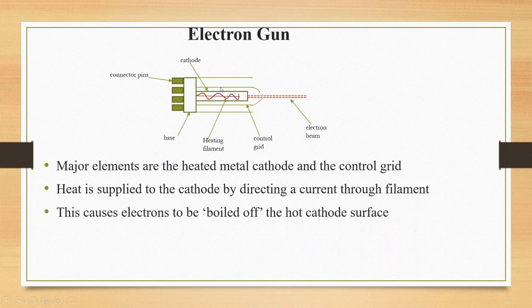The electron gun has two parts: first is the heated metal cathode, and second is the control grid. Heat is applied to the cathode by directing a current through the filament, which causes electrons to be boiled off the hot cathode surface.